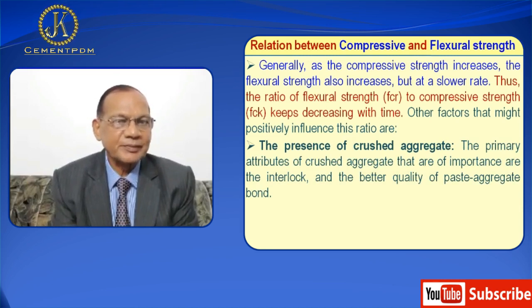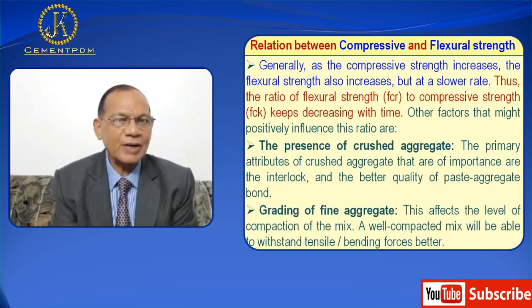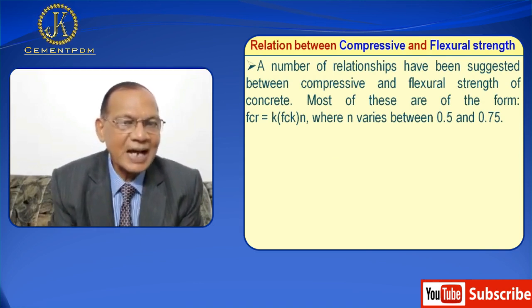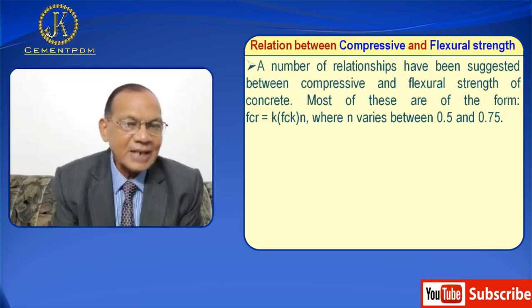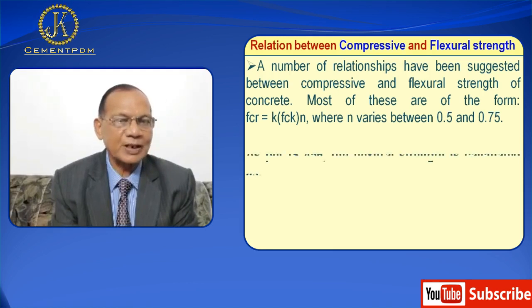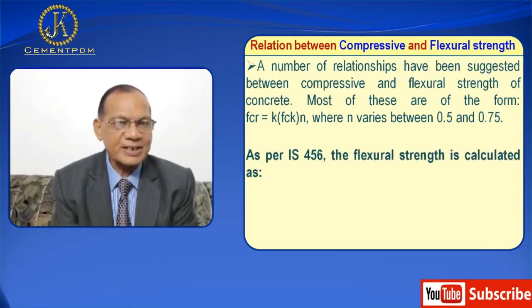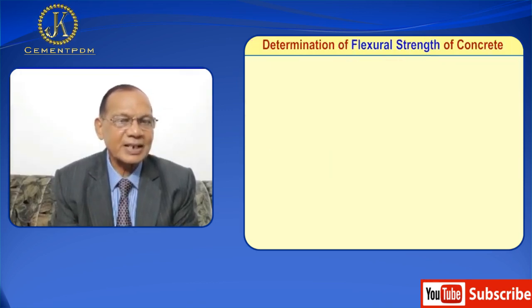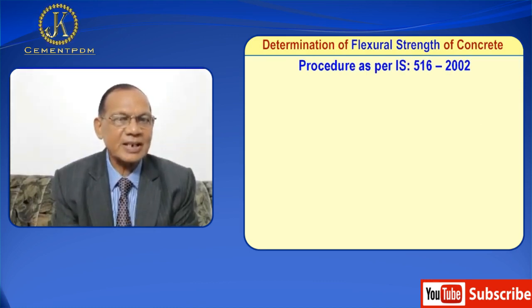Other factors that positively influence this ratio are the presence of coarse aggregate — the primary attributes being interlock and the better quality and grading of coarse aggregate, which affects the level of compaction of the mix. A well-compacted mix will be able to withstand tensile forces better. Most relationships are of the form FCR = K × FCK^n, where n varies between 0.5 and 0.75. As per IS 456, the flexural strength is calculated as FCR = 0.7 × √FCK, where FCK is the characteristic compressive strength.